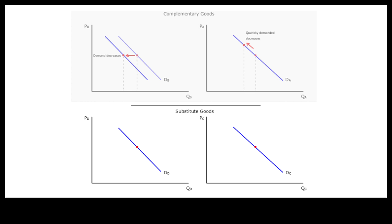On the lower panels, we have two substitute goods C and D. Suppose the price of good C goes down on the right panel. The law of demand tells us that more of good C will be purchased by moving down the demand curve — in other words, the quantity demanded for good C will increase. Since goods C and D are substitutes, more good C will replace the use of good D. But the price of good D has not changed, so less good D would be bought only if the demand for good D decreases by shifting to the left.